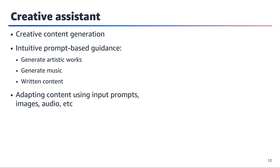Creative tools can leverage the capabilities of foundation models and large language models to facilitate content generation and adaptation across various creative domains. Such advanced AI systems enable users to generate diverse forms of creative output, including written materials, artistic works, music compositions, and other expressive mediums. These tools can work with intuitive prompt-based guidance, empowering users to generate artistic pieces, compose musical works, and create written content through natural language interactions. Additionally, these systems possess the ability to adapt and customize existing content based on various input sources, such as text prompts, images, or audio files.